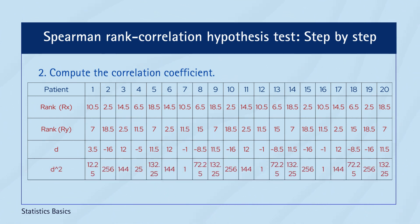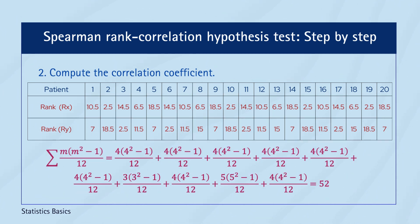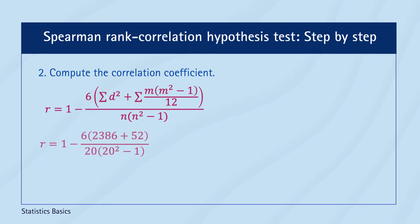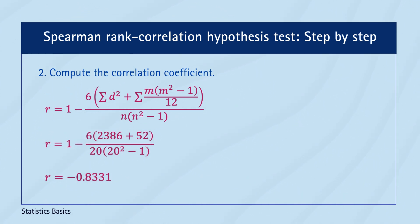Square each of the differences obtained and add up all the squared differences. In stress level, 5 data points are repeated 4 times, while in sleep quality ratings, 3 data points are repeated 4 times, 1 data point is repeated 5 times, and 1 data point is repeated 3 times. Substituting these values into the Spearman's Rank Correlation Coefficient formula, the calculated value is minus 0.8331. This value suggests a strong negative monotonic association between stress level and sleep quality ratings.